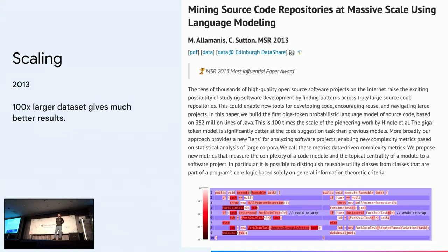We hear a lot about scaling today — making models and datasets bigger — and this was also happening in 2013, with much less powerful models. People were studying the idea that if you take a million lines of code and train a model on it, then train the exact same model on 100 times more, you start to see qualitative improvements in what the models learn. This points to early ideas around scaling laws: there's real diversity in what people do, a long tail of languages and patterns, and as you go orders of magnitude up in data, you uncover more nuance and more of what the models are able to understand.